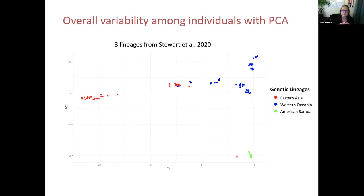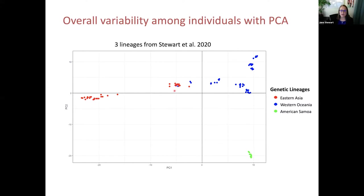We performed a principal component analysis using the three lineages identified in the 2020 paper. We found three groups that followed the original work: the Eastern Asian group in red, Western Oceania in blue, and the American Samoa group in green. This gave us confidence that the RAD loci were working well for further analyses.